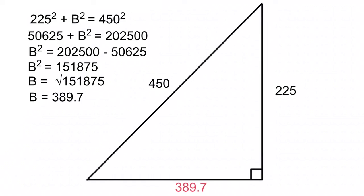That basically completes our walkthrough of Pythagoras's theorem. It doesn't matter which sides you have — you can go a squared plus b squared equals c squared, or if you have the hypotenuse you're just going c squared minus one side squared equals the other side squared. It's not even grade 12 — probably grade 10 geometry. In our next video we're going to start getting into more trig functions, talking about the ratios of sides and getting into sine, cosine, and tangent.